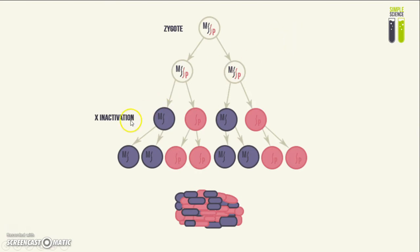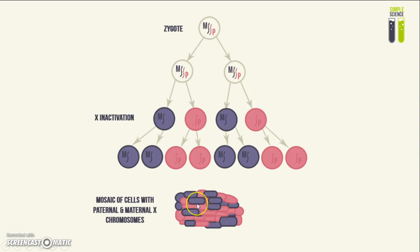The process of X inactivation is totally random. Cells then undergo further cell division to make more of the same kinds of cells with the same X chromosome inactivated. So you end up with a mosaic of cells with paternal and maternal X chromosomes randomly inactivated.